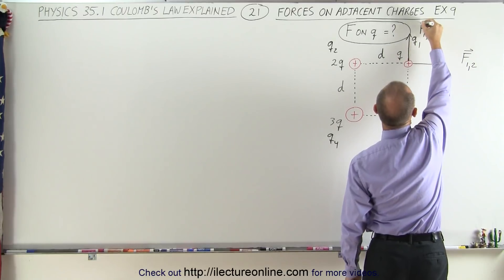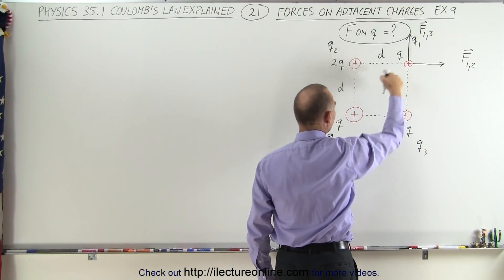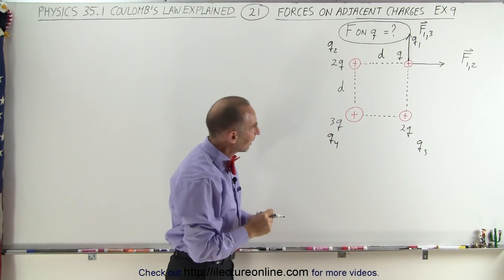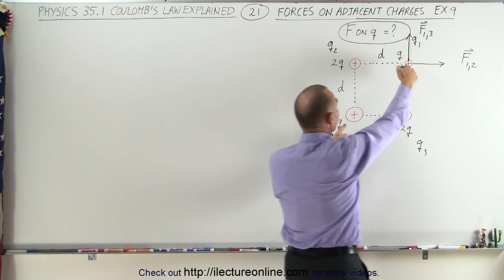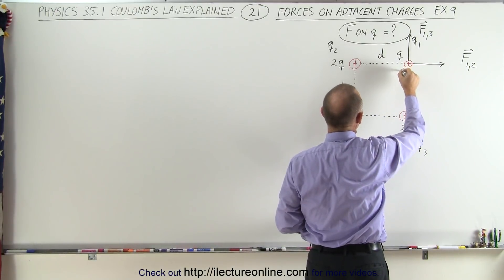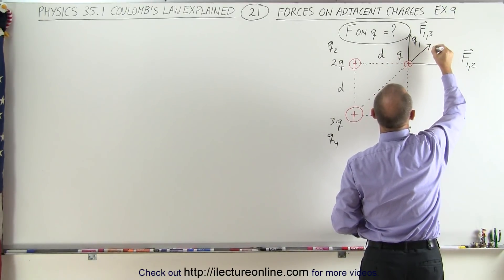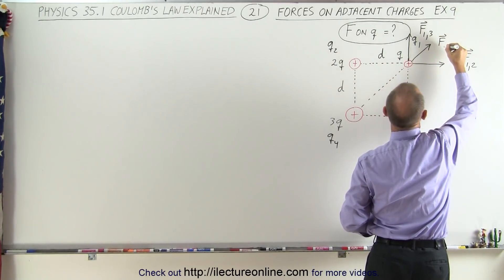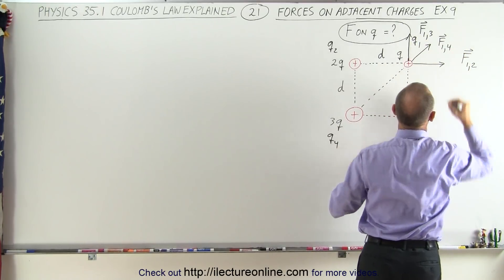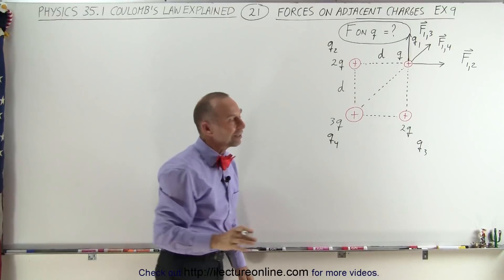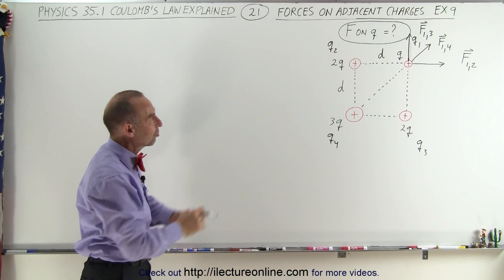And then we have a force of repulsion between 1 and 4. Notice that this is a larger charge, so we expect a bigger force. However, it's at a greater distance, which causes a smaller force — so it'll probably be a little bit smaller than the other two. This would be the force between 1 and 4. It's always good to label with the right notation to make it easier to see which force represents which situation.